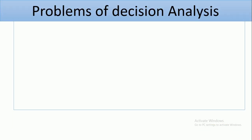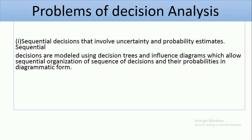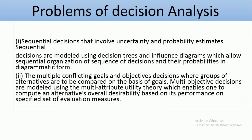What are the problems associated with decision analysis? The first is sequential decisions that involve certainty and probability estimates, typically solved using decision trees and influence diagrams. The second problem is when you have multiple conflicting goals and objectives — having a lot of conflicting goals is always a challenge when analyzing the decision-making process.